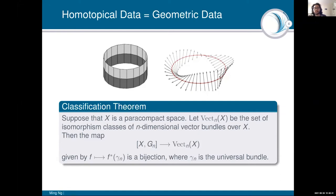This gives us a first glimpse of the tight relationship between homotopical data — as encoded through maps — and geometric data — as expressed through vector bundles. This leads to a much more general phenomenon: the classification theorem. If X is a sufficiently nice space (like a CW complex), and Vect_n(X) is the set of isomorphism classes of n-dimensional vector bundles over X, then the theorem says that homotopy classes of maps from X into the classifying space BO(n) are in bijection with the n-dimensional vector bundles over X. The homotopical data strongly determines the geometric data, which is very exciting from the point of view of algebraic topology.